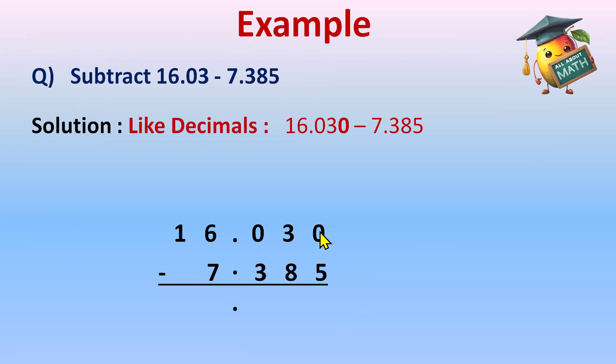0 minus 5 is not possible, so 0 will borrow 1 from 3. It will become 10, and 3 minus 1 will be 2. So 3 is left with 2 and we have 10 here. 10 minus 5 is 5.